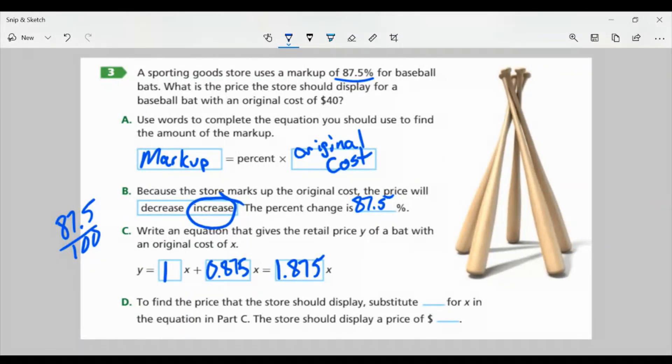Now for part D, it says to find the price that the store should display, substitute $40 for X in the equation in part C. So with this equation, Y equals 1.875X. I want to plug in 40 for that X. Y equals 1.875 times 40. Now when we multiply 1.875 times 40, we should get 75. So that means they're going to display a price of $75.